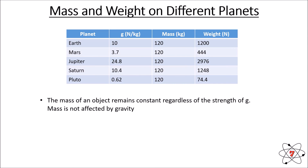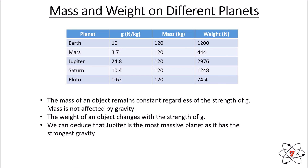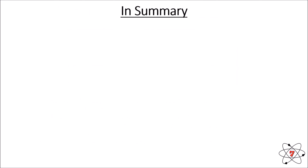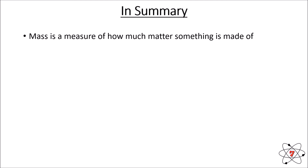Just to reiterate: the mass of an object remains constant regardless of the strength of gravity — mass is not affected by gravity. The weight of an object changes with the strength of gravity. We can deduce that Jupiter is the most massive of these planets because it has the strongest gravity, and Pluto is the least massive because it has the weakest gravity.